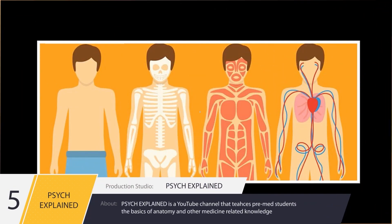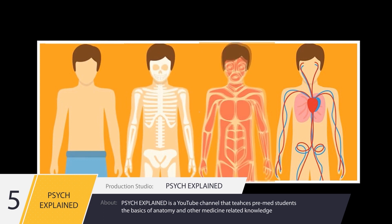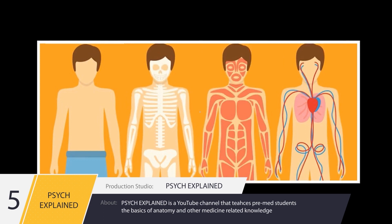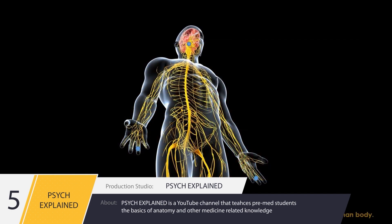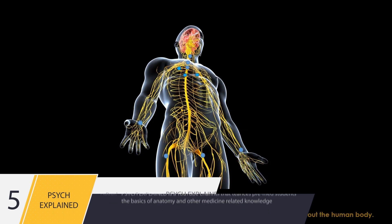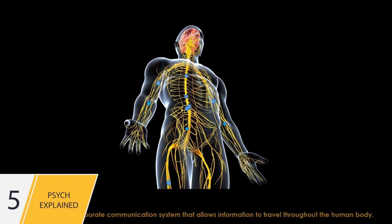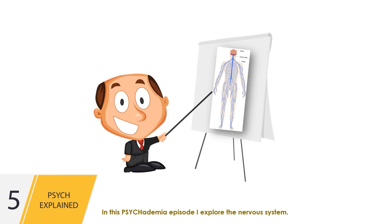Take away your skin, bones, muscles, ligaments, joints, and organs. What remains is an elaborate communication system that allows information to travel throughout the human body. In this Psychedemia episode, I explore the nervous system.